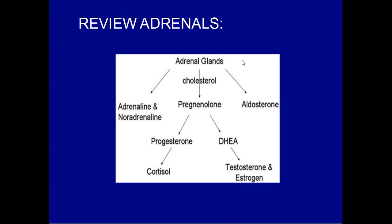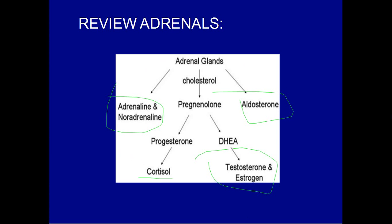A quick review of the adrenal glands, relevant to Waterhouse-Friderichsen syndrome: the adrenal medulla produces adrenaline and noradrenaline, while the cortex produces cortisol, sex hormones, and aldosterone.